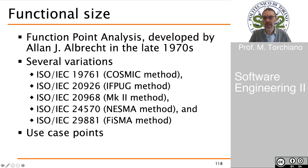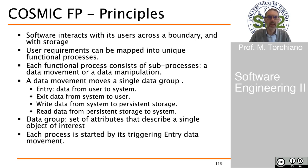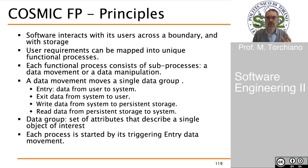Another alternative way of measuring functional size, if requirements are defined in terms of use cases, is by means of use case points. But let's focus on how we can compute function points using the COSMIC approach. The basic idea is that the software interacts with its users across a boundary and with some storage across another boundary. So there are two boundaries of the software system — on one side there are the users, and on the other there is the storage.